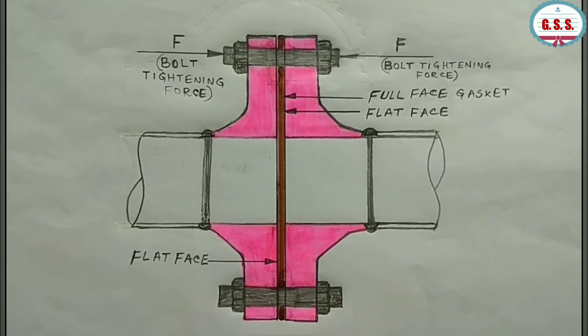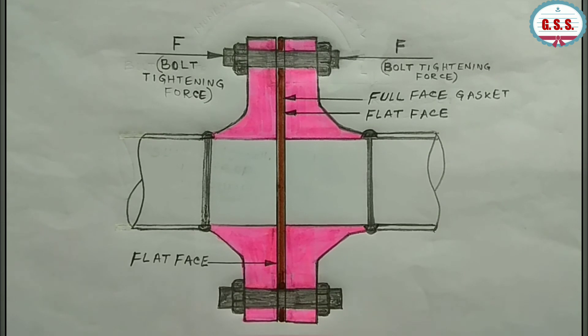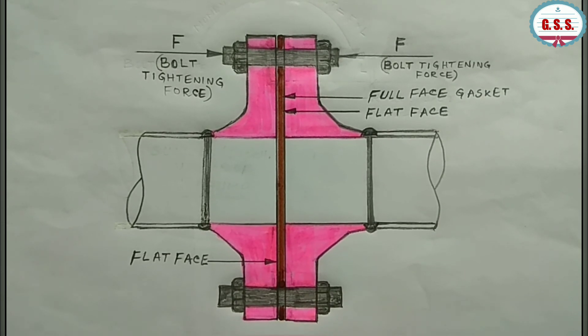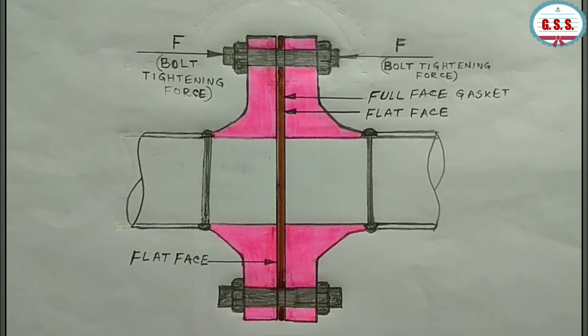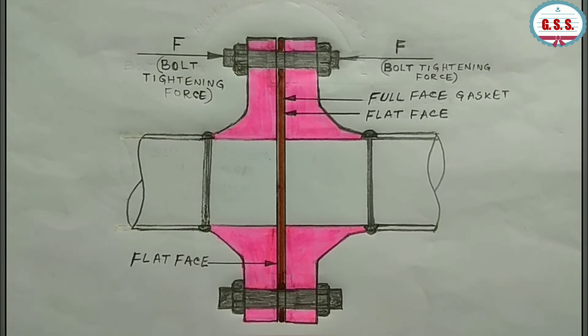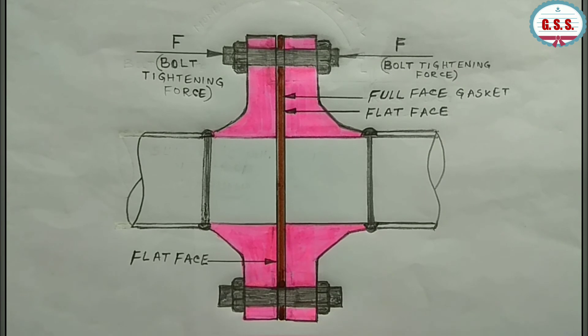Also, for flat face flange joint, since the gasket is a full face gasket and all bolts are passing through it, replacement of full face gasket is difficult because to replace the gasket, all the bolts need to be removed from the flange joint.